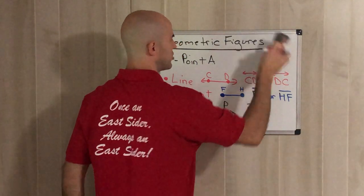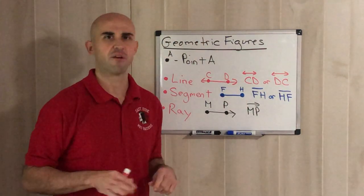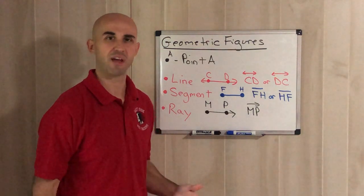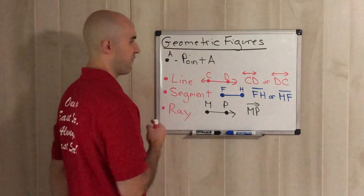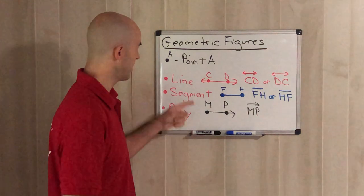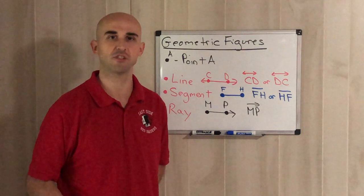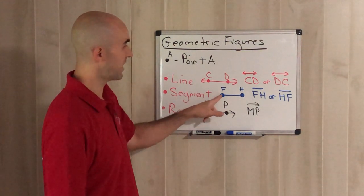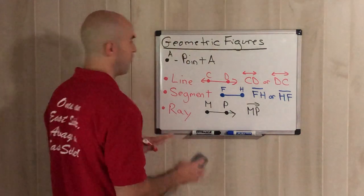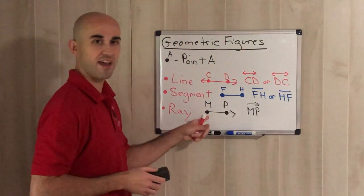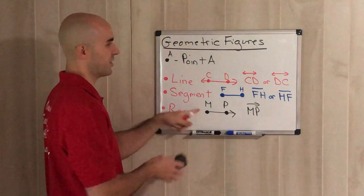When you do your quiz — which will be either Friday if you're in A day, or Monday if you're in B day — one of the questions will ask you directly: what's the difference between a line and a segment? Always know: a line goes on forever in both directions, but a segment doesn't. A line goes on in both directions, a segment stops in both, and a ray goes on forever in one direction.